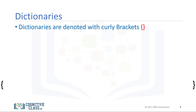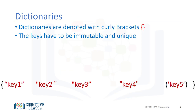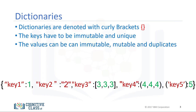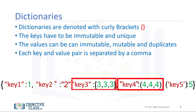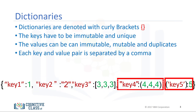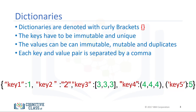To create a dictionary we use curly brackets. The keys are the first elements — they must be immutable and unique. Each key is followed by a value separated by a colon. The values can be immutable, mutable, and duplicates. Each key and value pair is separated by a comma.